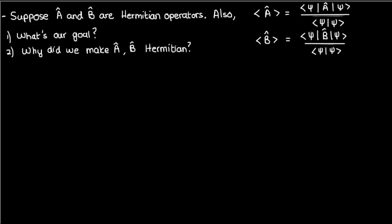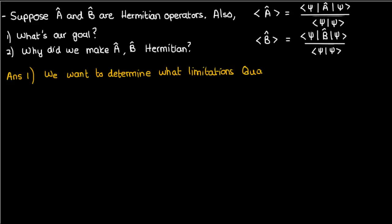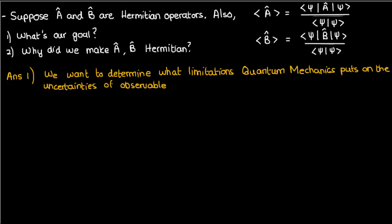I'll start by answering the first question. The reason we're trying to prove the uncertainty principle is that we want to check what limitations quantum mechanics puts on the uncertainties of observable quantities like position, momentum, etc. And the best way to check those limitations is to use Hermitian operators.